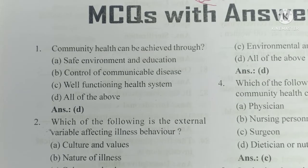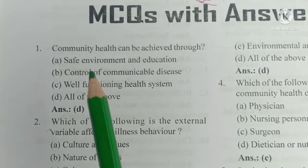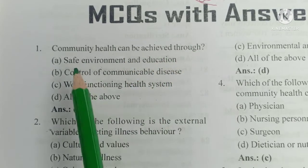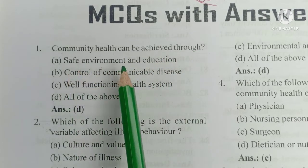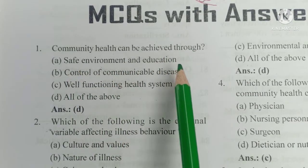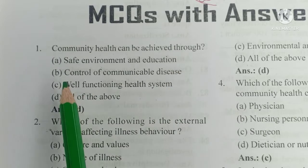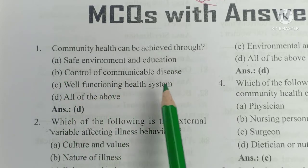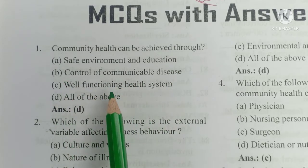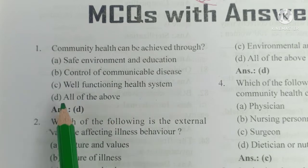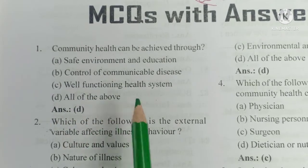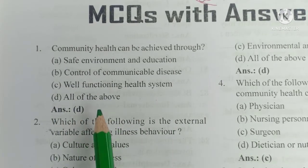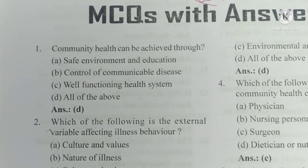Question number 1. Community health can be achieved through: A) safe environment and education, B) control of communicable disease, C) well-functioning health system, D) all of the above. The answer is D, all of the above.